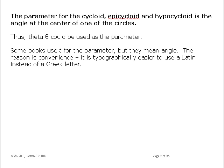I've said that the cycloid, epicycloid, and hypocycloid were examples of parametric equations, but what is the parameter? The parameter is the central angle theta from one of the circles. Some books will use t for the parameter, but they really mean that central angle. They do not mean the time that's taken for the circles to move. So we're looking at the central angle.